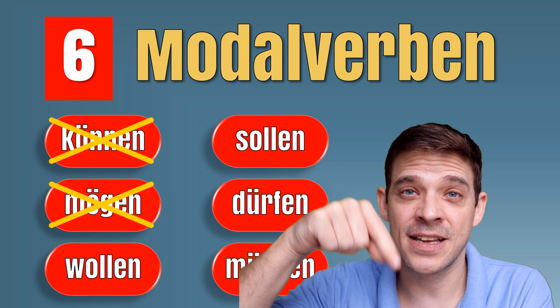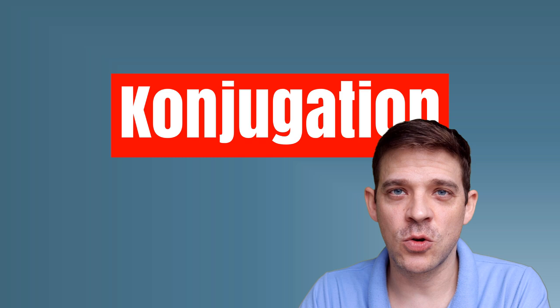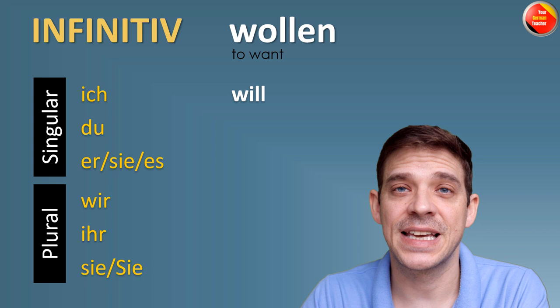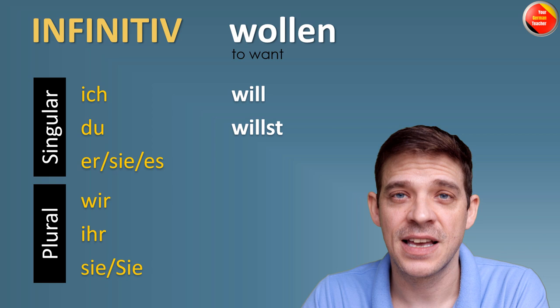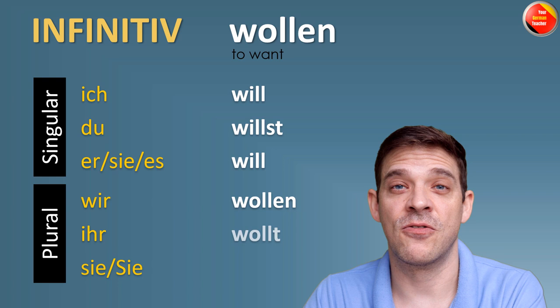Wollen means 'to want.' We start with the conjugation. Infinitiv: wollen. Ich will. Du willst. Er, sie, es will. Wir wollen. Ihr wollt. Und sie wollen.